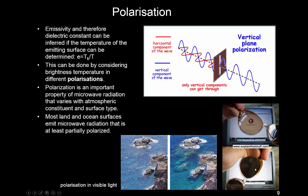So that polarization is important when we do microwave radiation because we can use that feature to estimate the temperature and the emissivity or the dielectric constant separately, and that is because the dielectric properties vary as a function of polarization and most land and ocean surfaces emit partially at least polarized radiation.